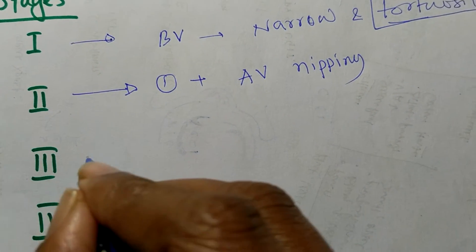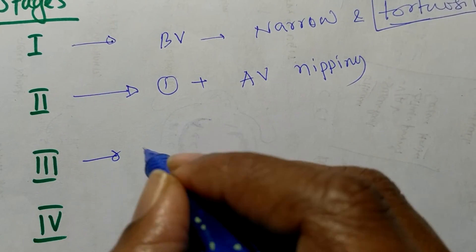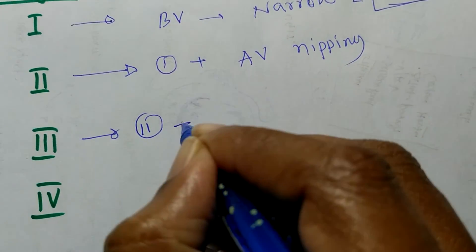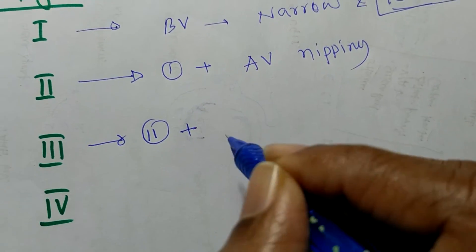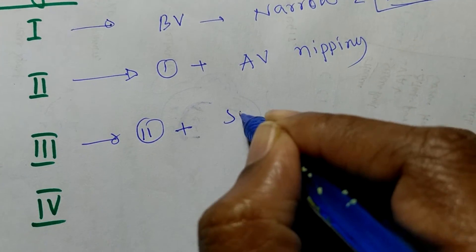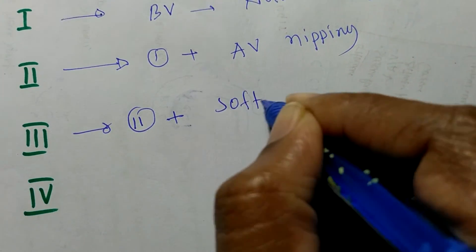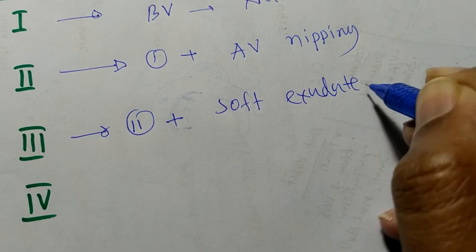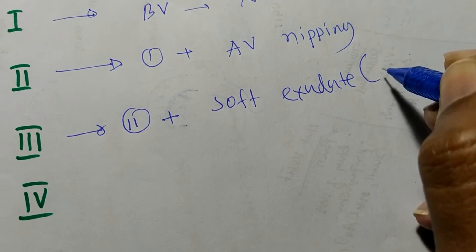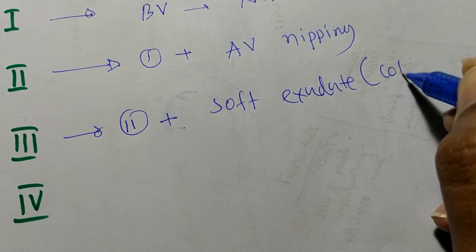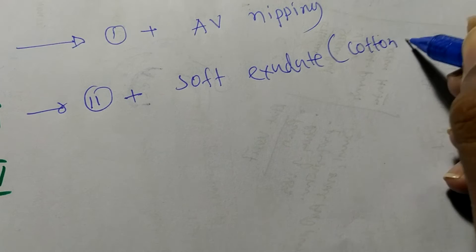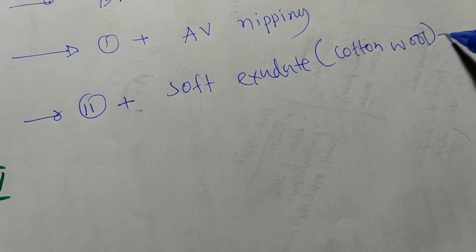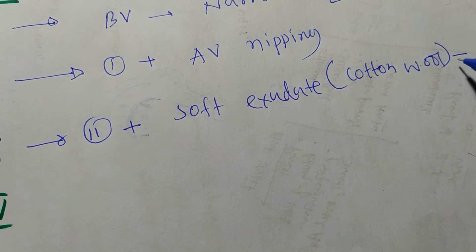Stage two means stage one plus AV nipping.